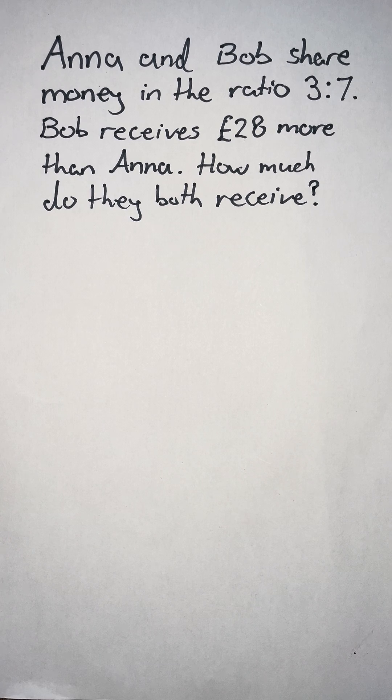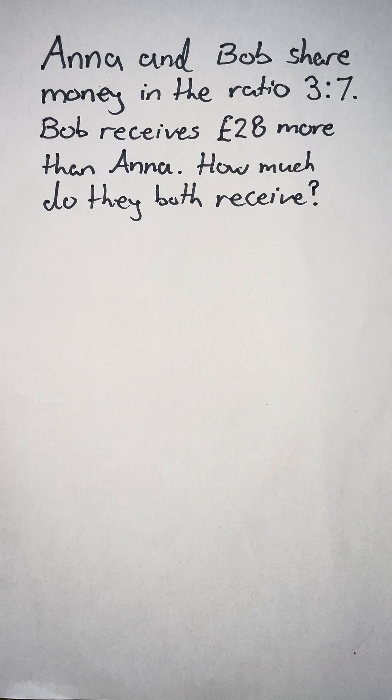We're told in this question that Anna and Bob share money in the ratio 3 to 7. Bob receives £28 more than Anna. How much do they both receive?